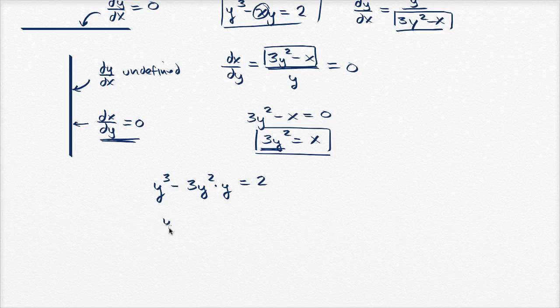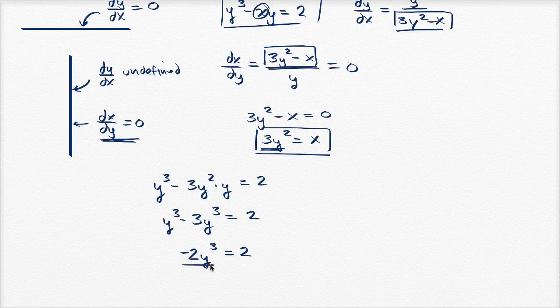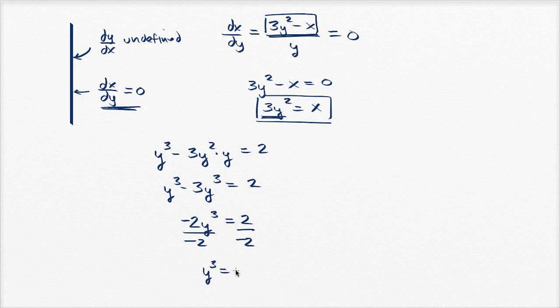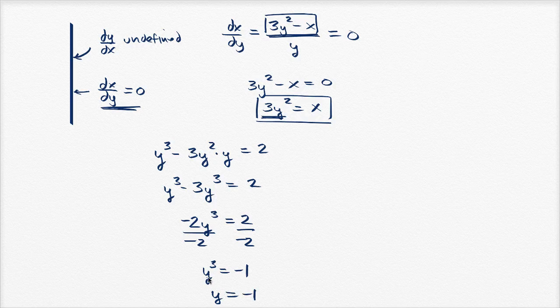And so we get y³ - 3y³ = 2. This is -2y³ = 2. We can divide both sides by -2. And we get y³ = -1 or y = -1. Negative one to the third power is negative one.